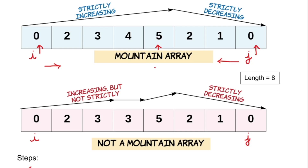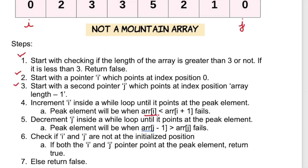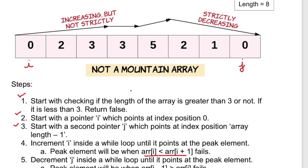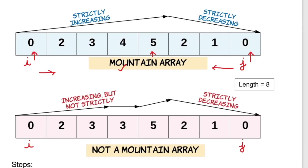After the iterations, if i and j both point at the peak element, then it is a valid mountain array. We find the peak by iterating i while adjacent elements are strictly increasing, and iterating j while the previous element is greater than the next.